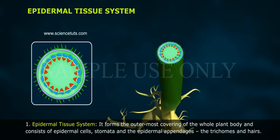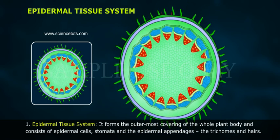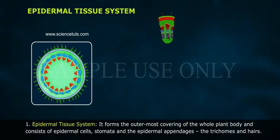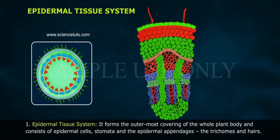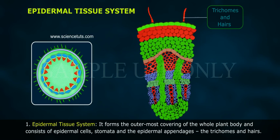Epidermal Tissue System: It forms the outermost covering of the whole plant body and consists of epidermal cells, stomata, and the epidermal appendages — the trichomes and hairs.